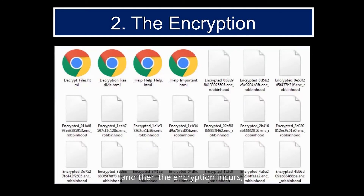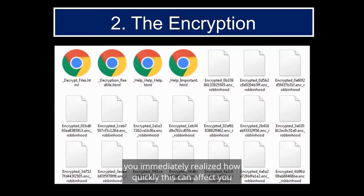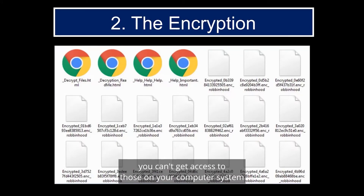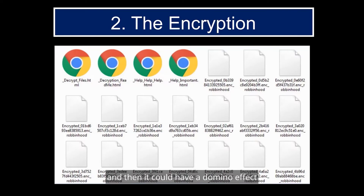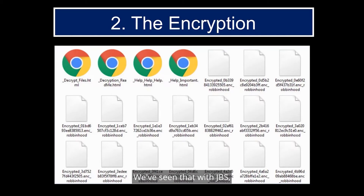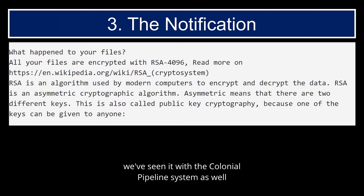Once the encryption occurs, you realize immediately how quickly it can affect you. All of a sudden your files are encrypted and you can't access them on your computer system. It can have a domino effect across your whole business, making it impossible to conduct business transactions at all. We've seen that with JBS and with the Colonial Pipeline system as well.